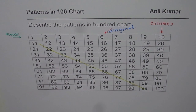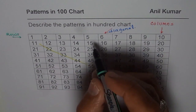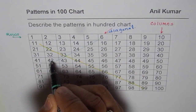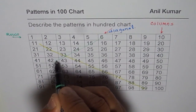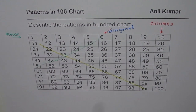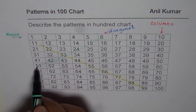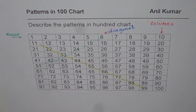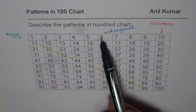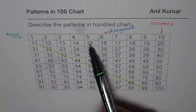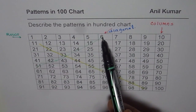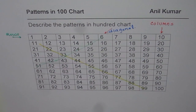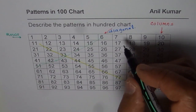Now let's look at some other diagonals. If you move left and down, starting with 6 for example, what kind of pattern do you see? Well, add the digits: 5+1, 4+2, 3+3, 2+4, 1+5 — is it 6? Yes! So if you move diagonally towards the left and down, the sum of digits is the same: 1+5=6, 2+4=6, 3+3=6, 4+2=6, 5+1=6.